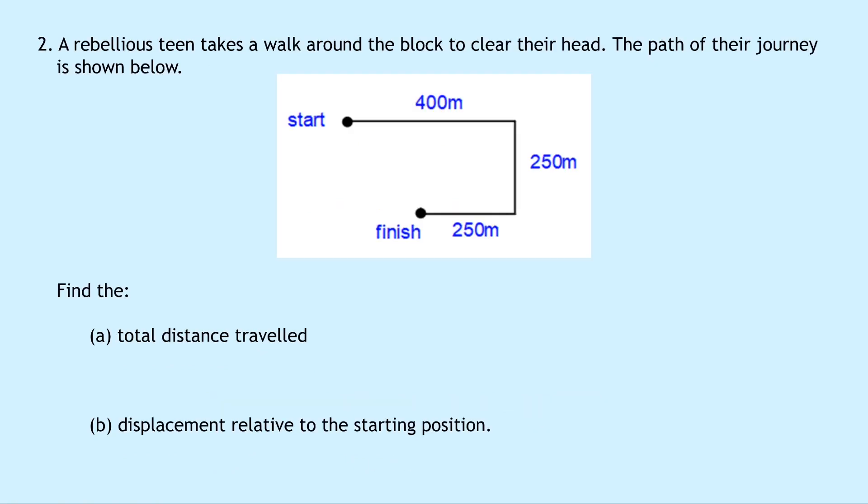Question 2 says a rebellious teen takes a walk around the block to clear their head. The path of their journey is shown below. So they start off here, they travel 400 metres east, 250 metres south and then another 250 metres west and they end up at the finish point here. And the question says to find the total distance travelled in part A and part B says find the displacement relative to the starting position. So just like in question 1.